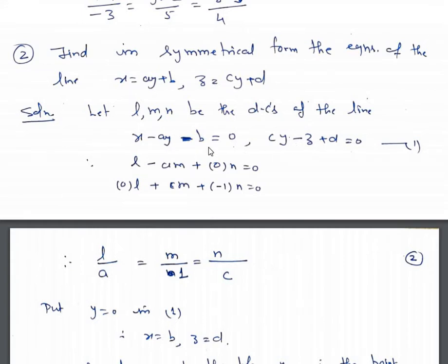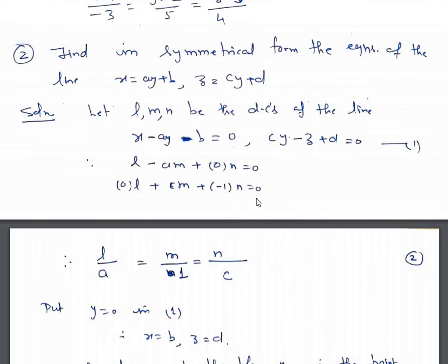Direction ratios of the normal to the first plane are 1, minus a, and 0, so l minus am plus 0 times n equals 0. Direction ratios of the normal to the second plane are 0, c, and minus 1, so 0 times l plus c times m plus minus 1 times n equals 0. By cross multiplication we get l upon a equals m upon 1 equals n upon c.